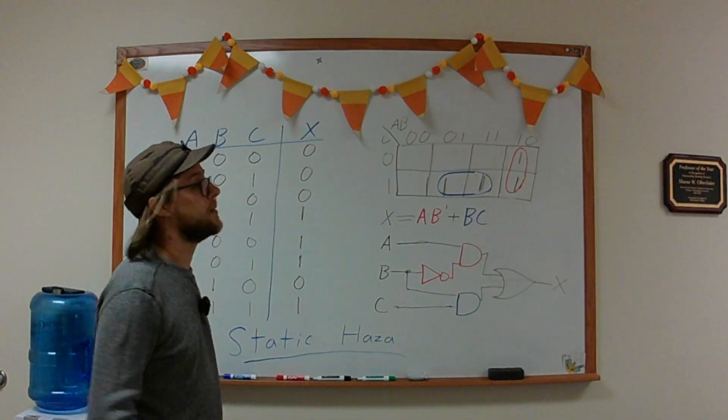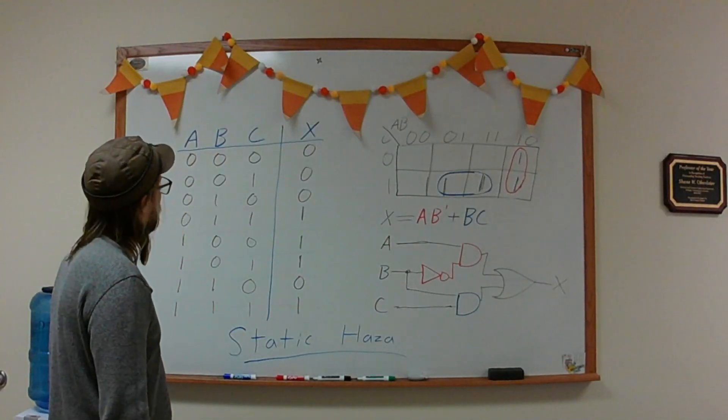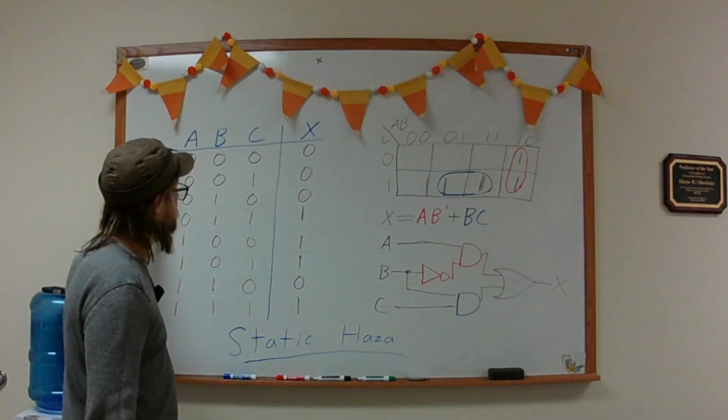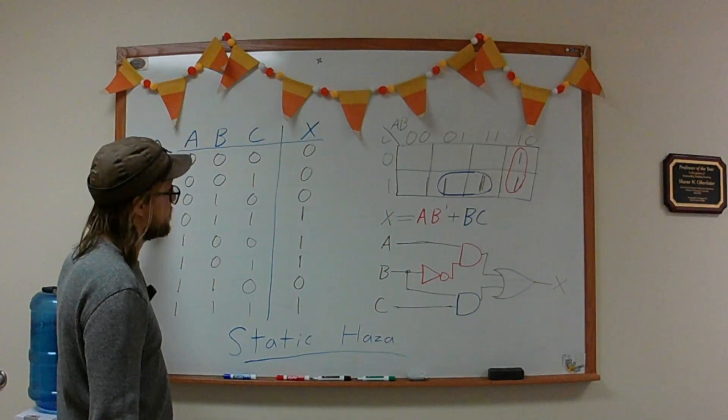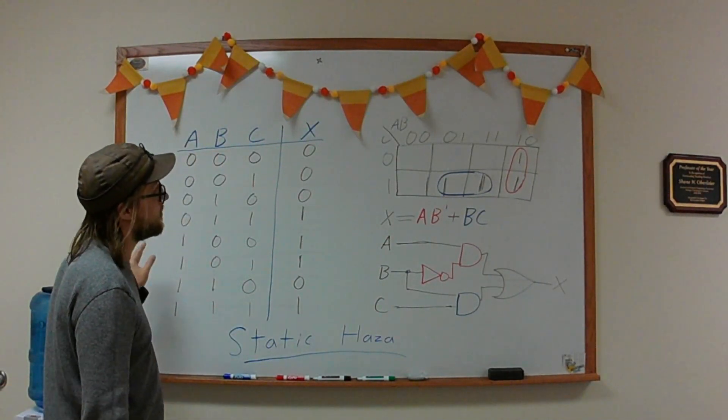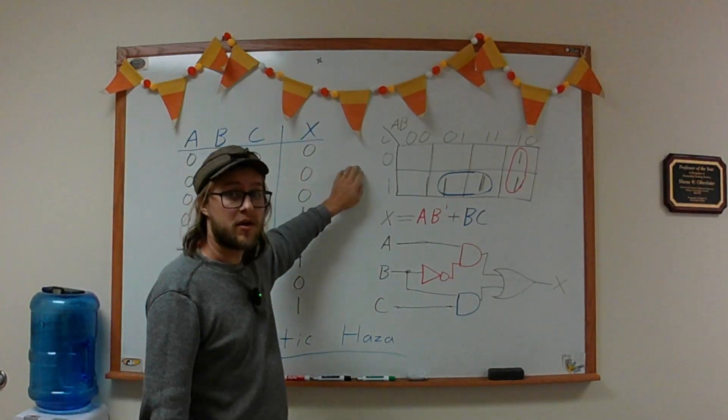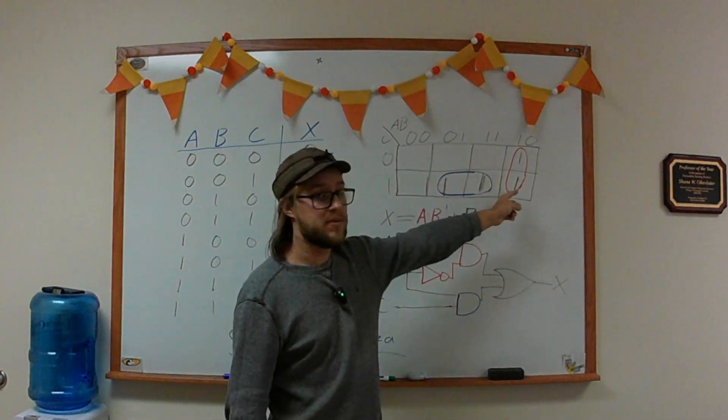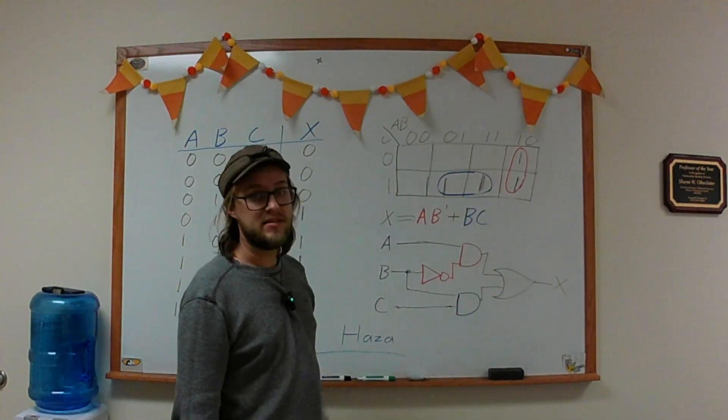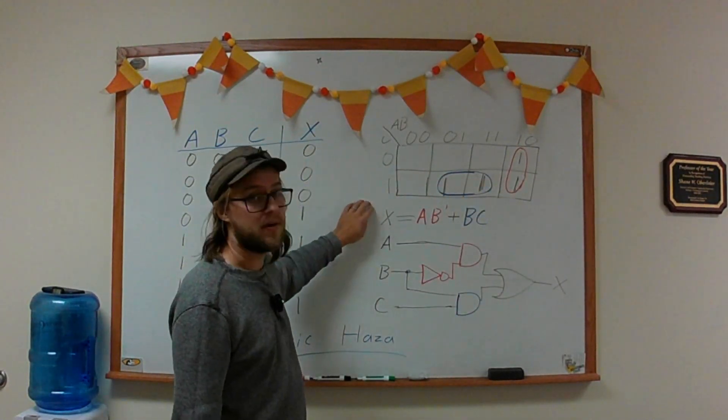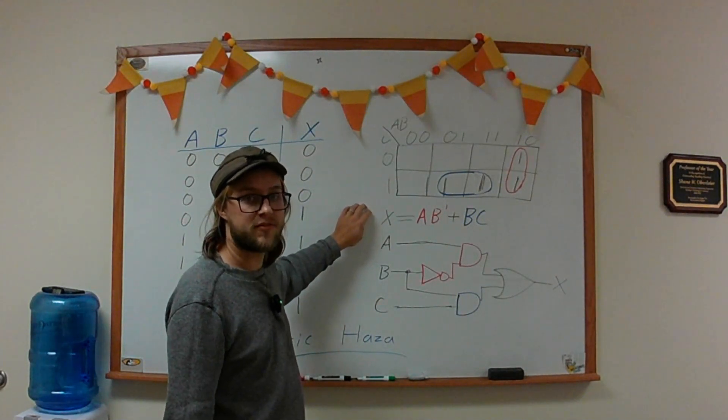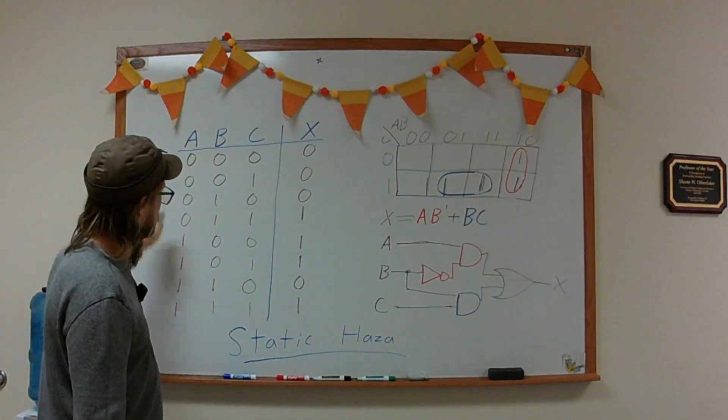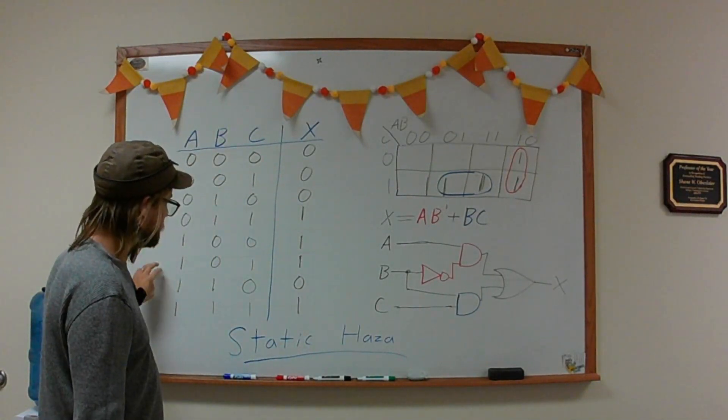I've got this truth table that I put together - that's where I started. From my truth table I went to my Karnaugh map, which has two essential prime implicants: AB' and BC. From there I got my equation, and from my equation I built my logic diagram. I'm not going to go through every individual state.